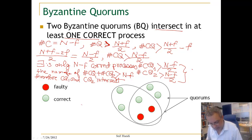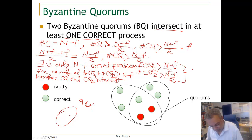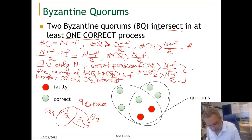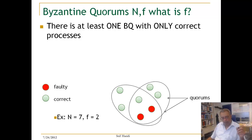To make this clear with an example: if we have a system with 9 correct processes and two quorums Q1 and Q2 each containing 5 correct processes, then the sum is 10. But we have only 9 correct processes, so Q1 and Q2 must intersect. Thus, two Byzantine quorums intersect in at least one correct process.